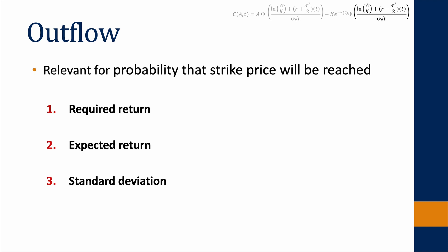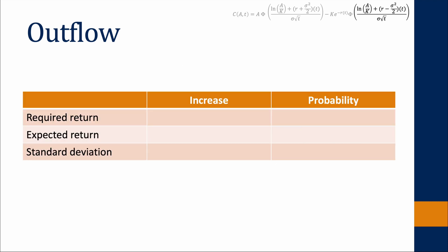If you want to understand the mathematical derivation of the formula, we have a separate video for you. Now we want to focus on how these three factors influence the probability that the option is executed. When the required return increases, the probability that the option reaches the strike price decreases, since higher returns are less likely than lower returns. Whereas if the expected return increases, the probability that the option reaches the strike price increases, since the necessary return consequently decreases.